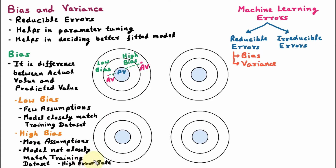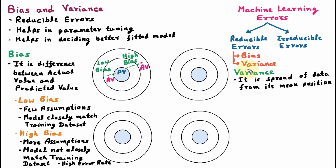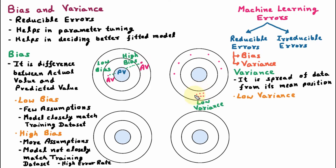The next concept is variance. Variance is the spread of data from its mean position — it shows how much the data is spread. If we have some data and it is spread at different places, this is variance. The first type of variance is low variance. If we have data and that data is very close to each other, this is low variance — here the spread is very less.